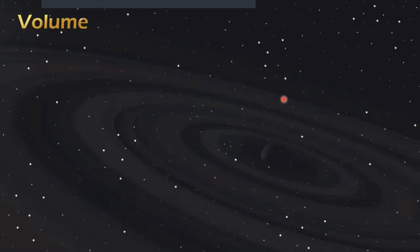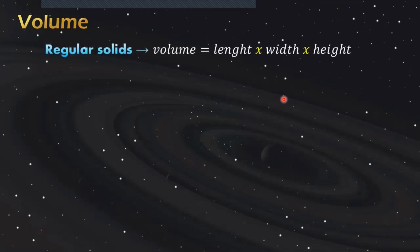Let's talk about how to measure volume. Volume is the quantity of three-dimensional space enclosed by a closed surface. For regular solids like a sphere, cylinder, or cube, we simply use this formula: volume equals length times width times height.